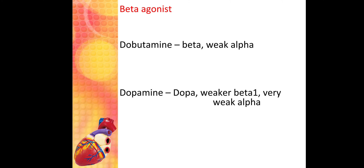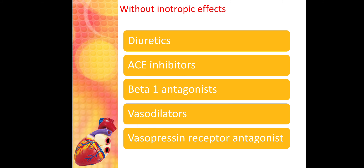Dopamine acts mainly on dopamine D1 receptors in the kidney, increasing renal blood flow and causing diuresis — helpful in heart failure. At higher doses it has beta-1 effects, increasing force of contraction, and at very high doses it acts on alpha receptors causing vasoconstriction. At the intermediate dose range acting on dopamine and weak beta-1 receptors, it is helpful in CHF, especially when the heart failure patient also has renal dysfunction.